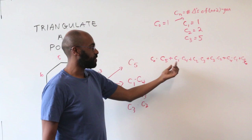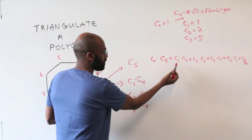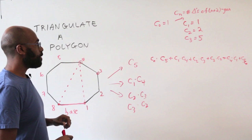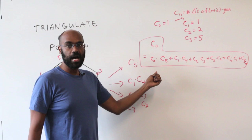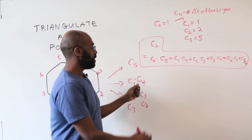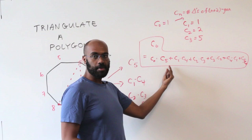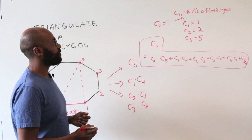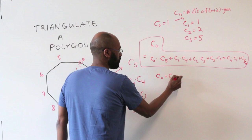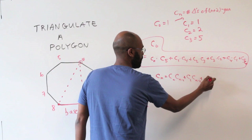The number of triangulations of this 8-gon is C_6. So what we have is a recursive equation: C_6 equals the sum of products C_i · C_{5-i} for i running from 0 to 5. This works in general — the fact that we were working with an 8-gon wasn't special. So in general, the recursive formula for the C_n's looks like: C_n = C_0·C_{n-1} + C_1·C_{n-2} + C_2·C_{n-3} + ... + C_{n-1}·C_0.